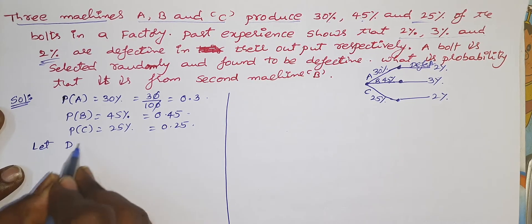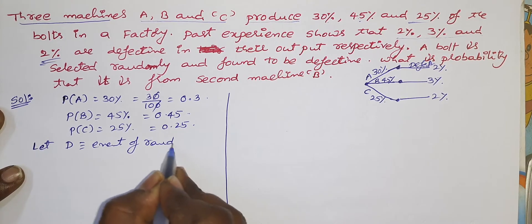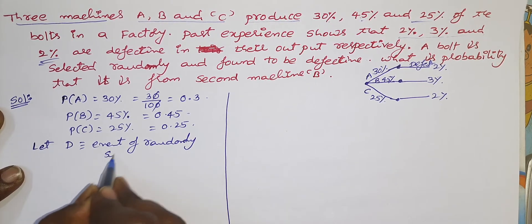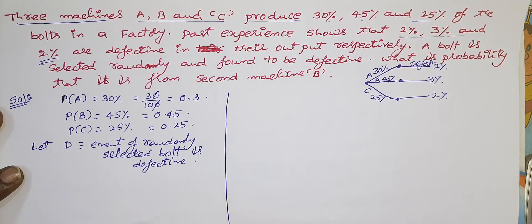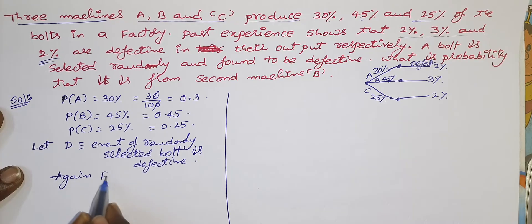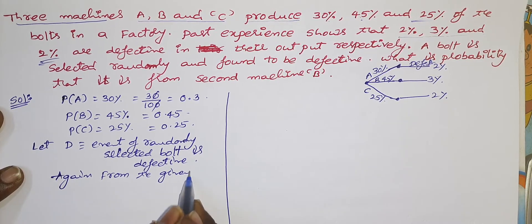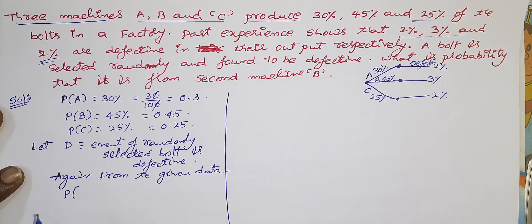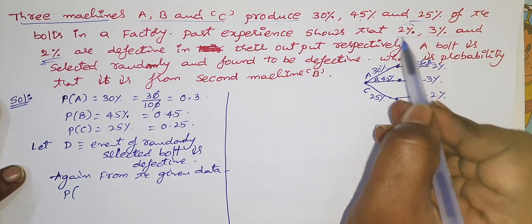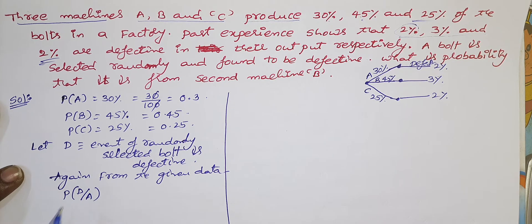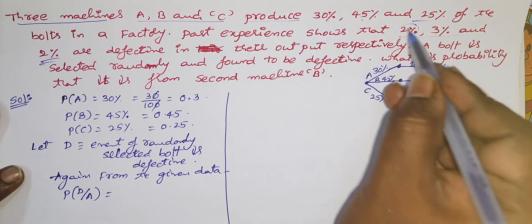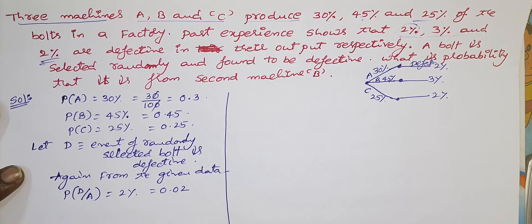Let D be the event that a randomly selected bolt is defective. From the given data, the probability of D given A — meaning the bolt came from A and is defective — is 2%, which is 0.02. We use conditional probability notation here because first it came from A, then it became defective.